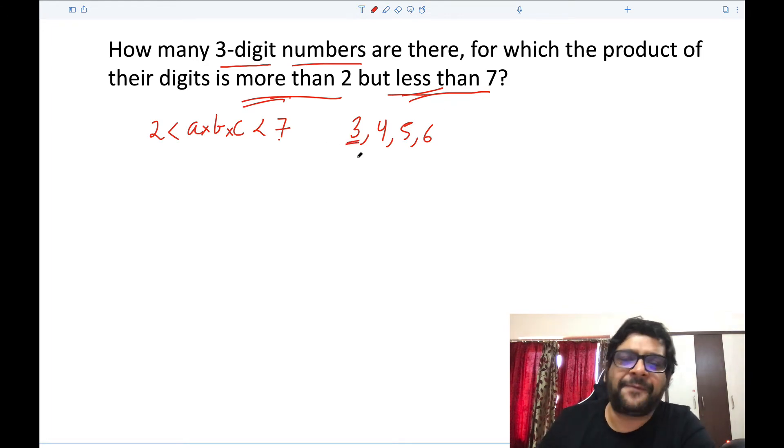Now if you have to consider three numbers whose product is three, the only way you can do this is if the three numbers are one, one, and three. Now in how many ways can you rearrange this? You can have one, one, three, or 131 or 311.